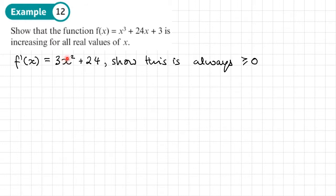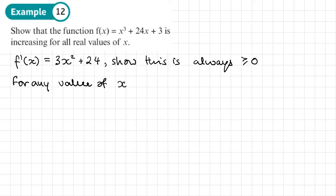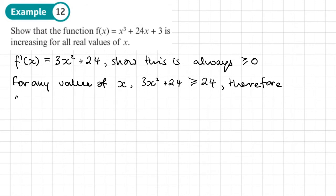We can see this, but we need to explain it. If we take any value of x and put it in here, whether it's positive or negative, we're going to square it and it's going to become positive. Then we have three times a positive number, and then we're adding 24 to it, so this whole thing will be positive. For any value of x, 3x² + 24 is always going to be greater than or equal to 24, since squaring makes any negative values of x positive. Therefore, f'(x) is always greater than or equal to zero.